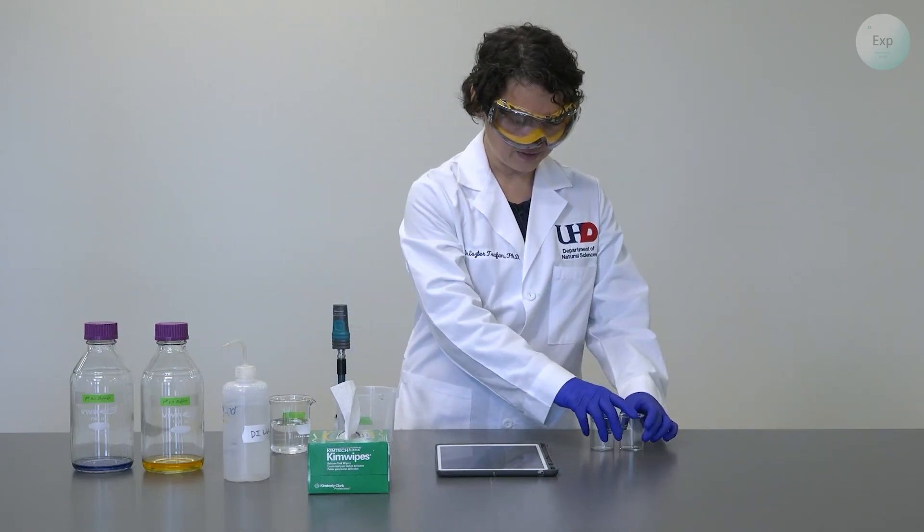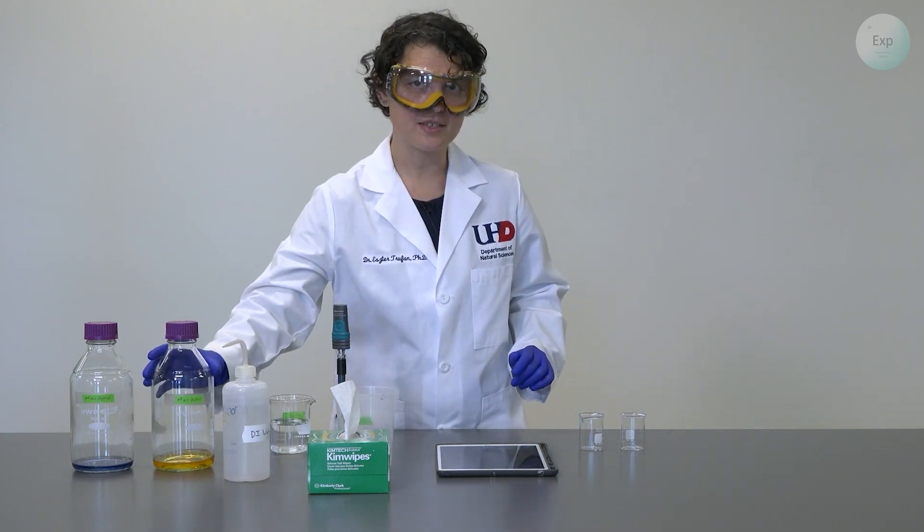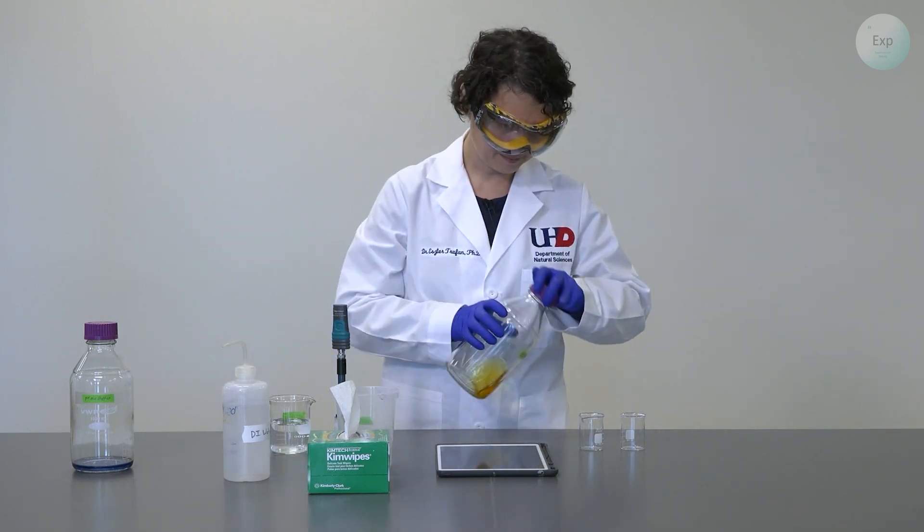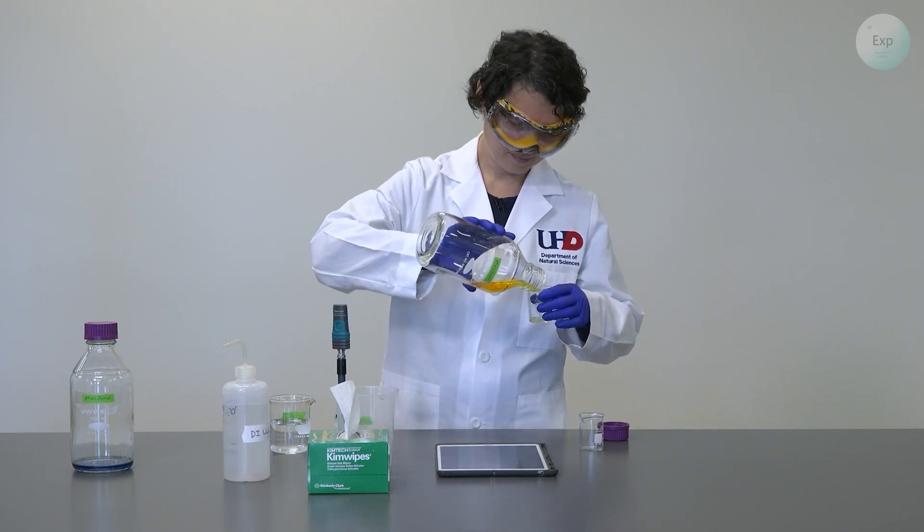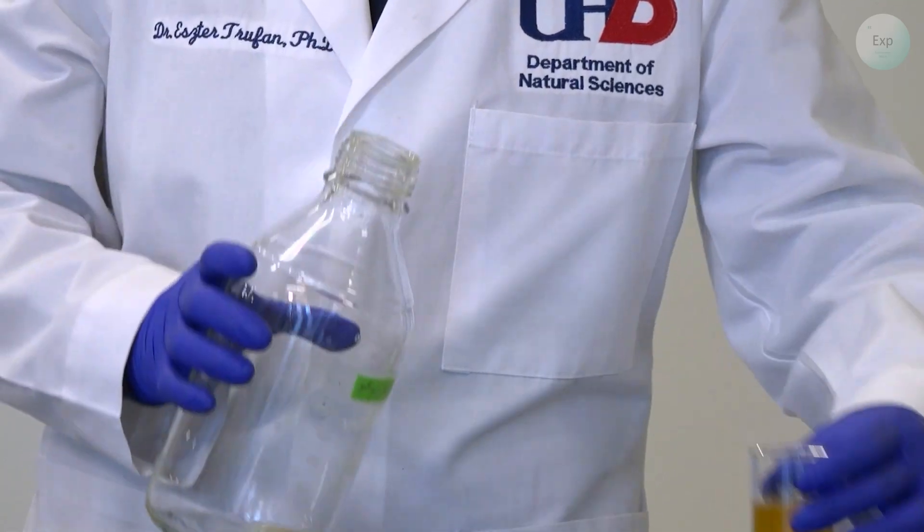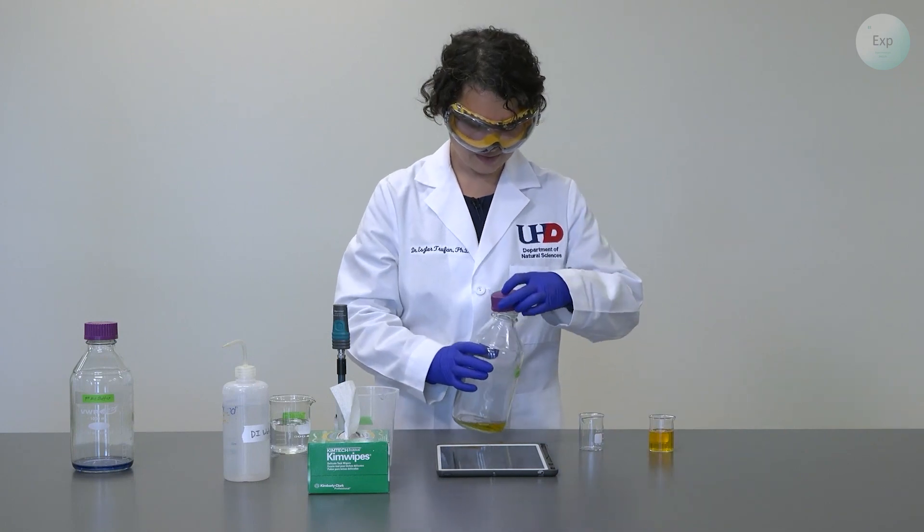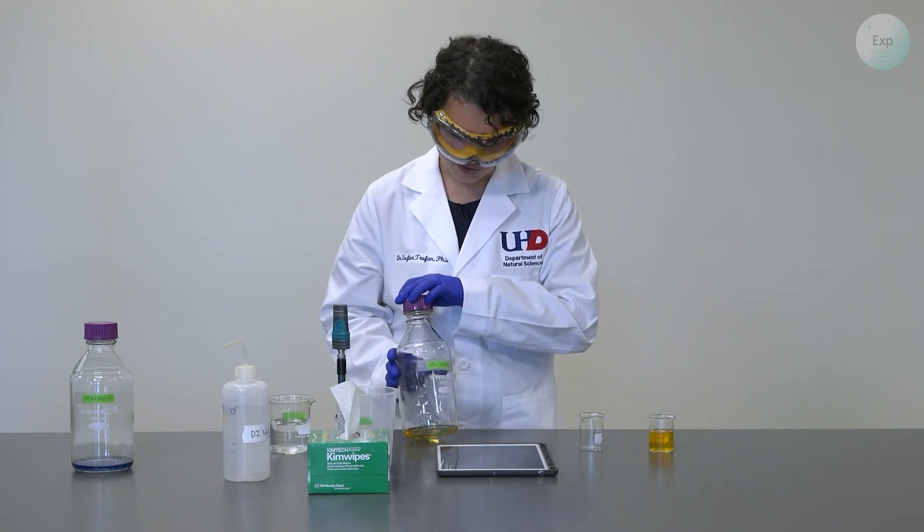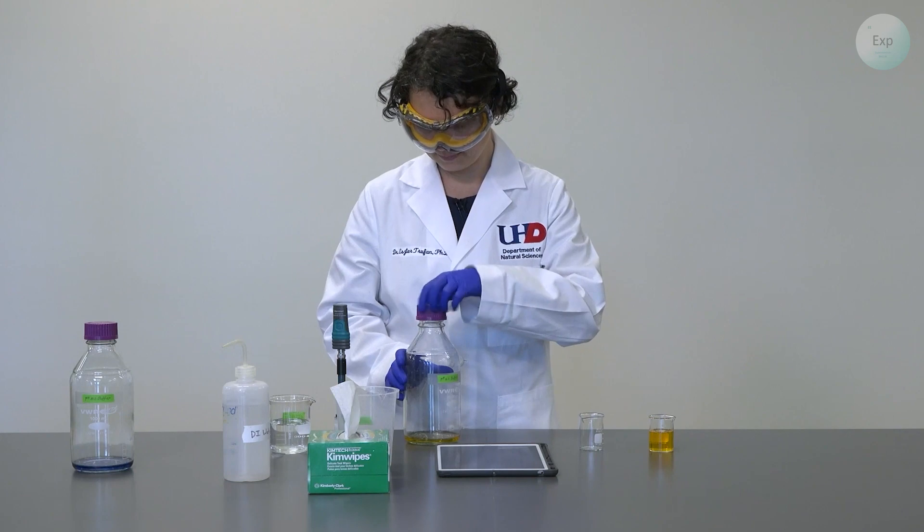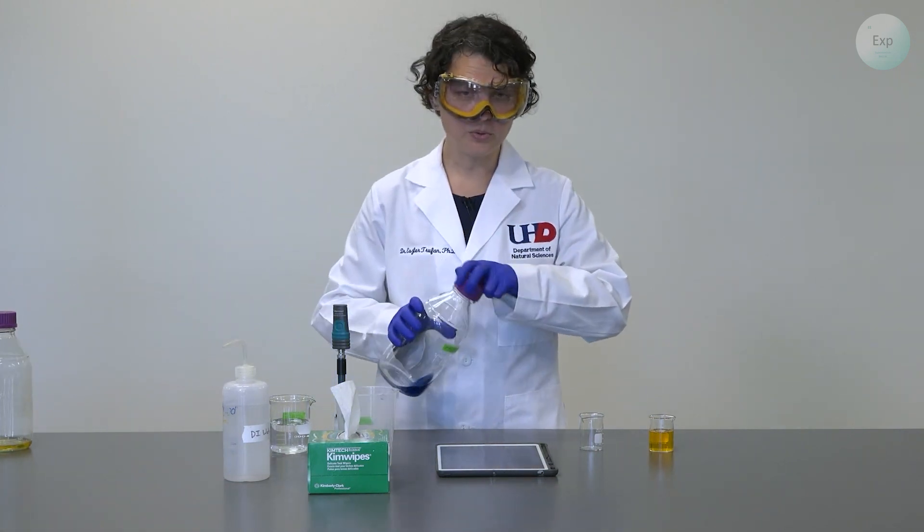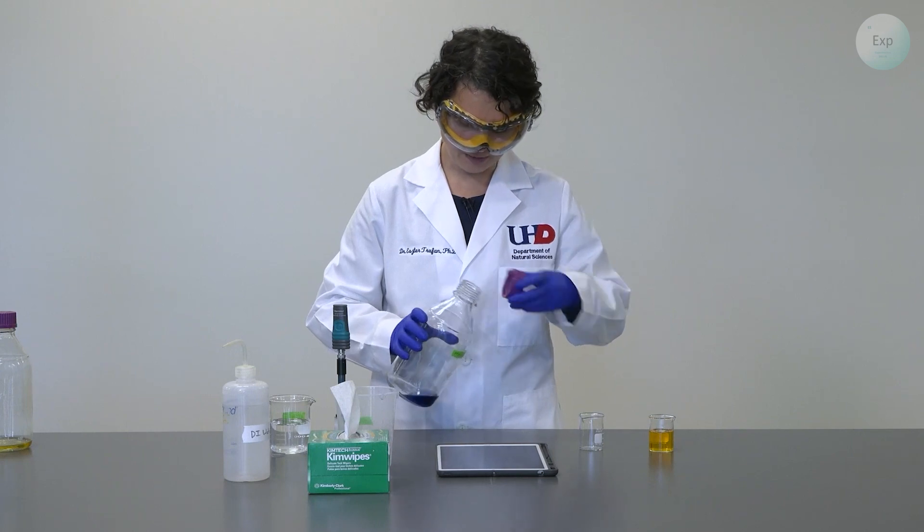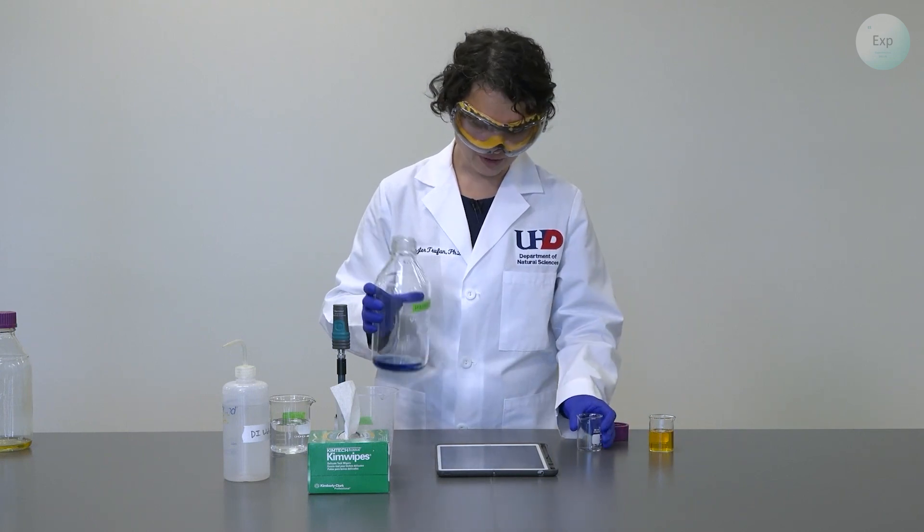So next we're going to transfer our buffer solutions into our secondary containers. The yellow-orange solution is the buffer with a pH of 4. The blue solution is another buffer and the pH of this buffer is 10.